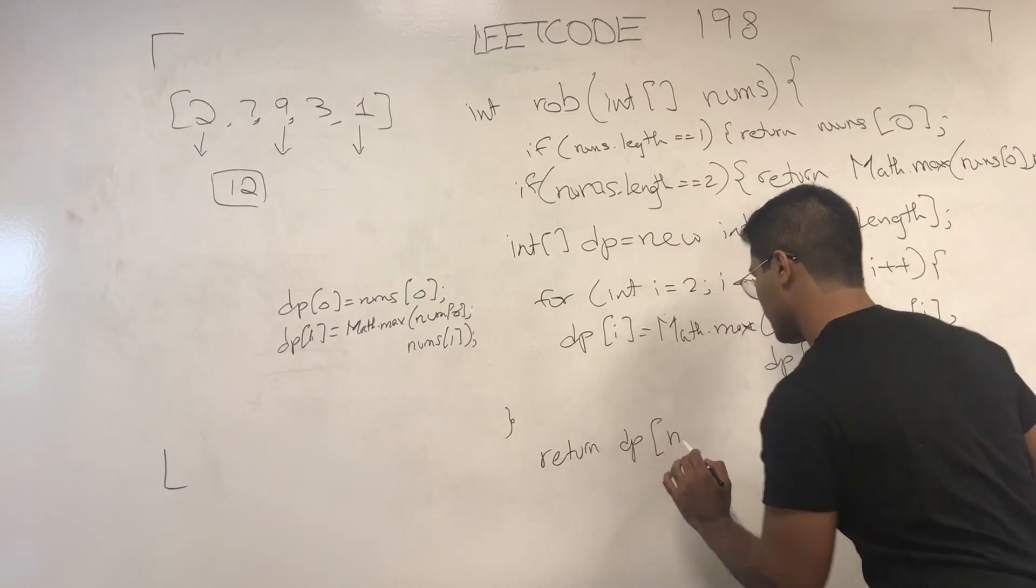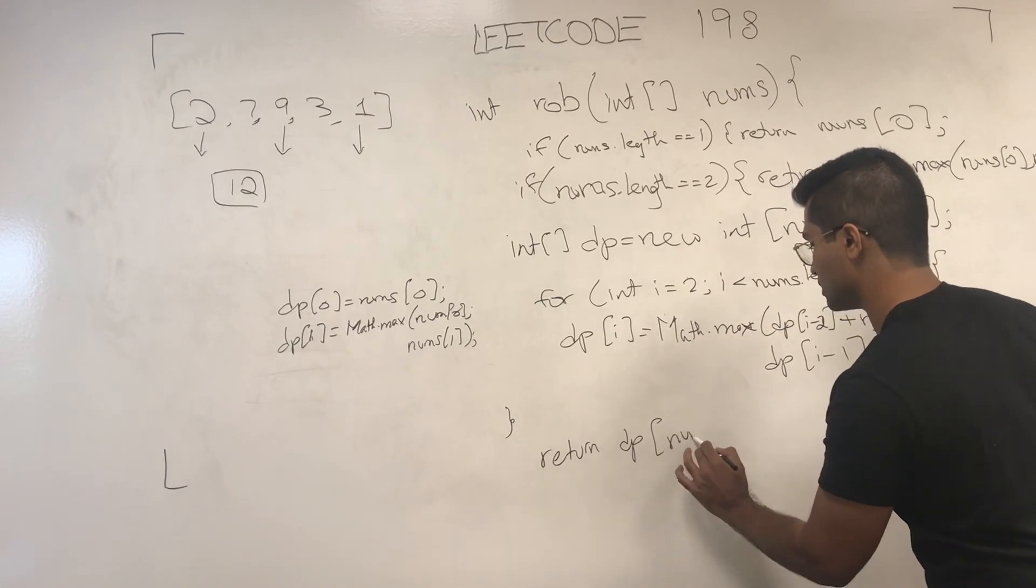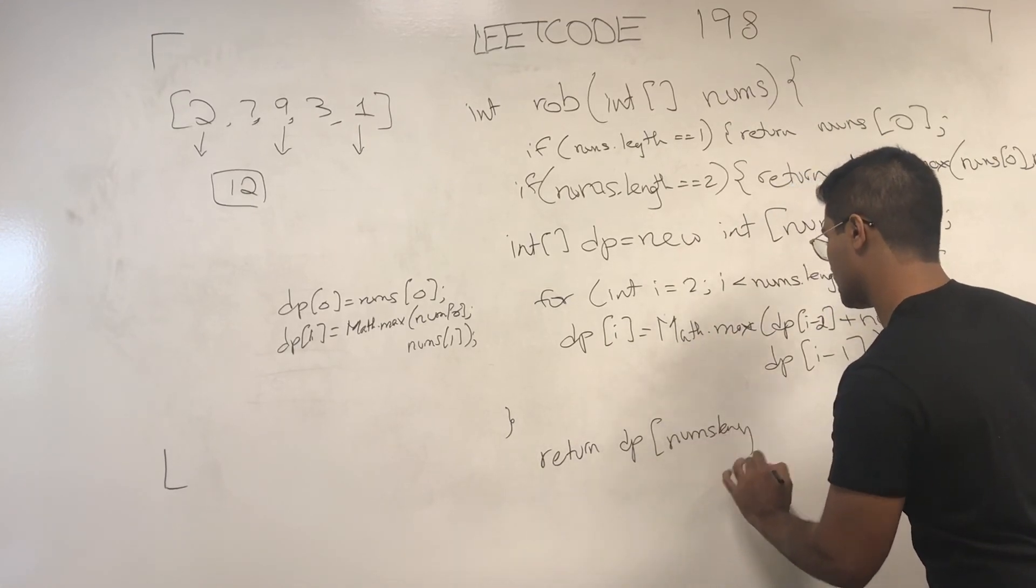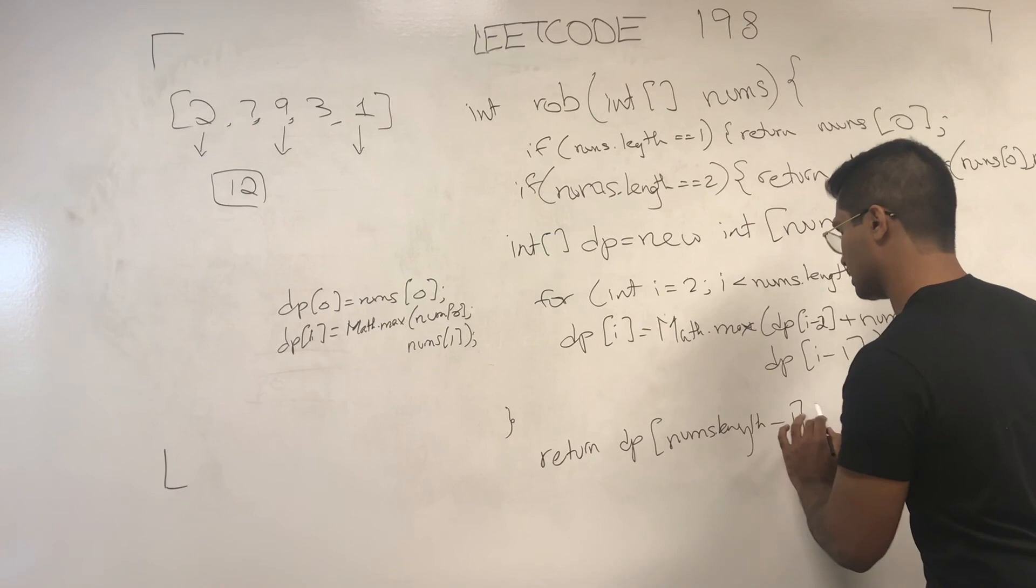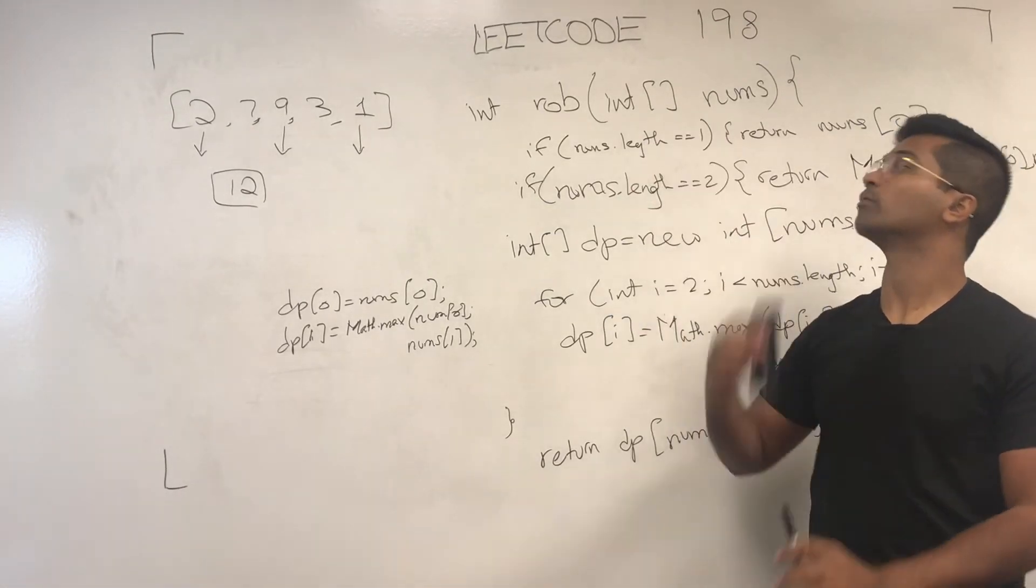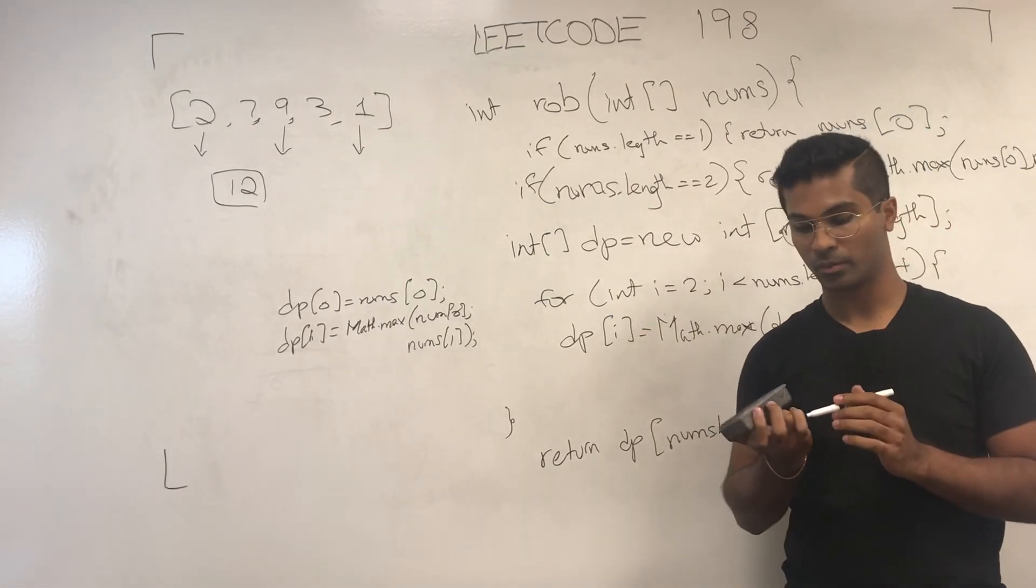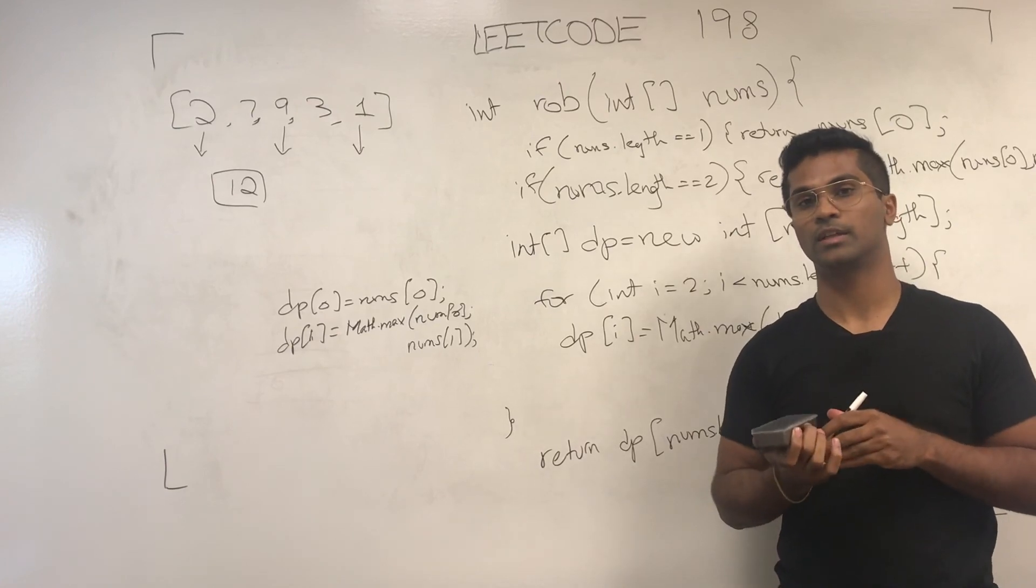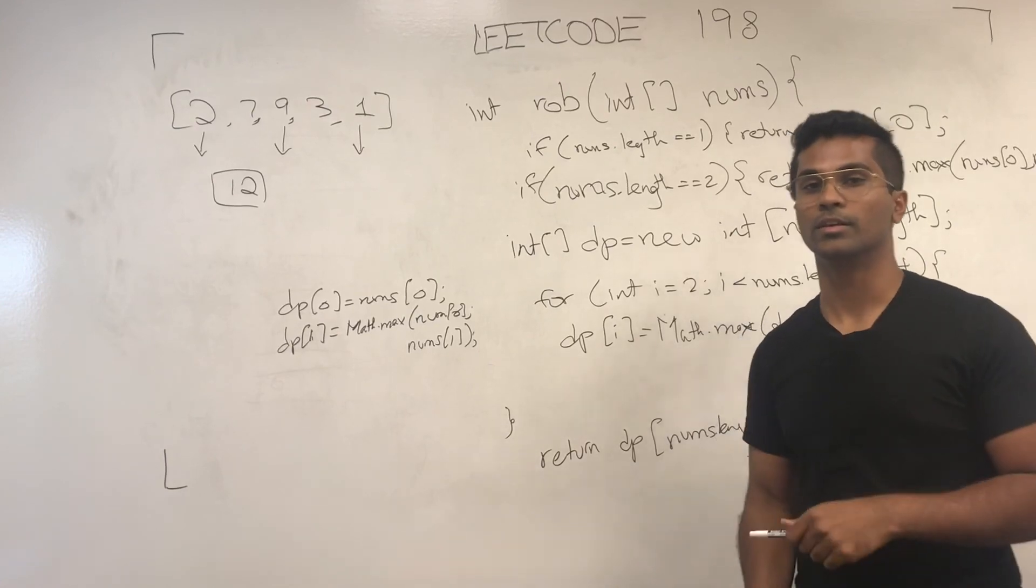And all we have to do is return DP of nums.length minus 1. Okay, so this is how you solve LeetCode 198. It's a pretty simple problem, but we'll get into the more difficult dynamic programming questions later on.